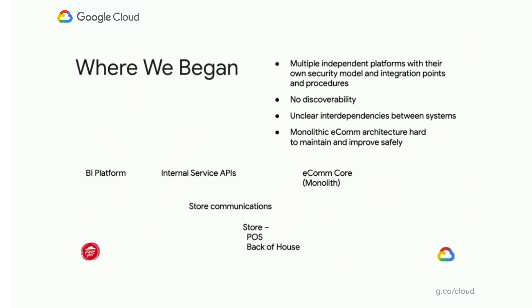In addition to that, we had started creating several internal service APIs — different components focused on things like localizing a customer to the appropriate store for deliveries or carry-outs, delivery tracker, and other pieces built more recently in a more modern microservice-centric architecture. We also had BI platforms, store communication, back-of-house systems, and POSs — a really complicated and wide-spanning technology stack. These technologies didn't have a common way for us to access them, with many different connections and approaches ranging from modern APIs to older TCP socket technologies with no standards around access.